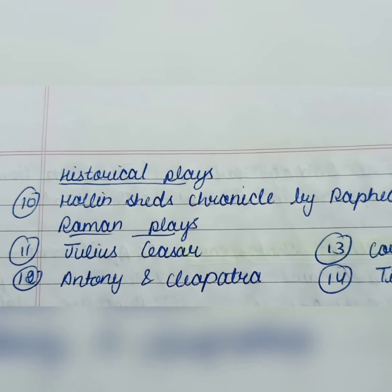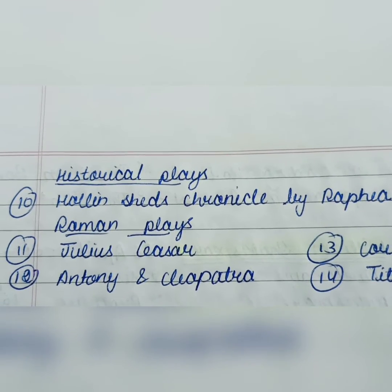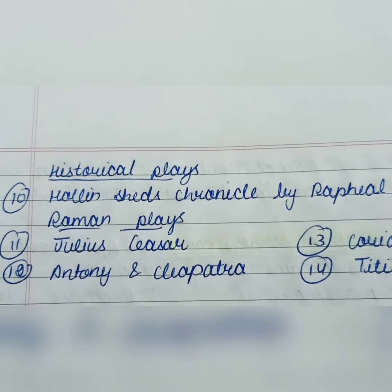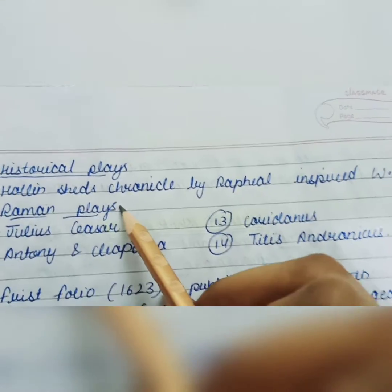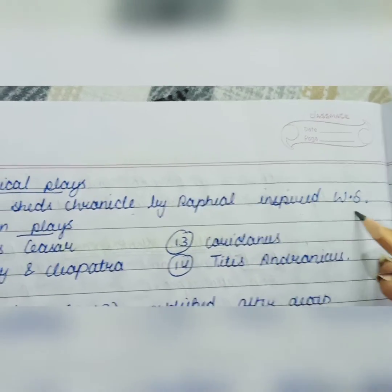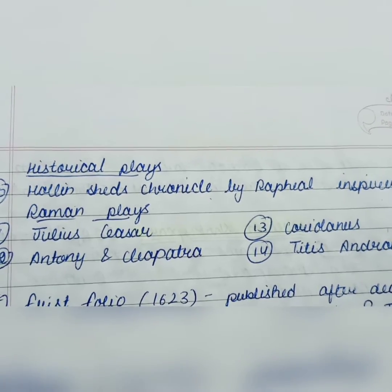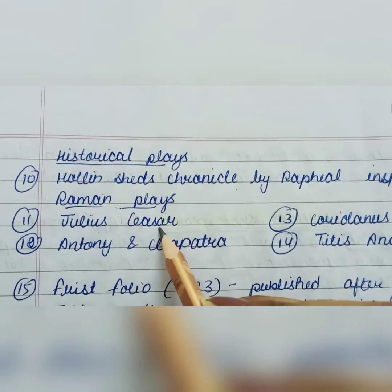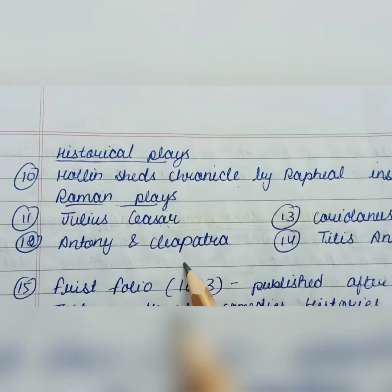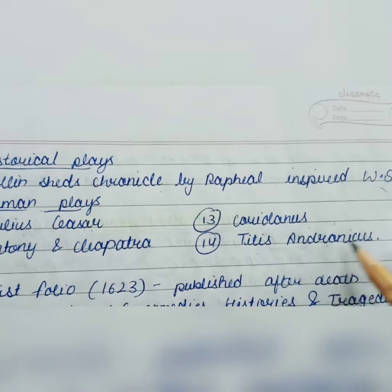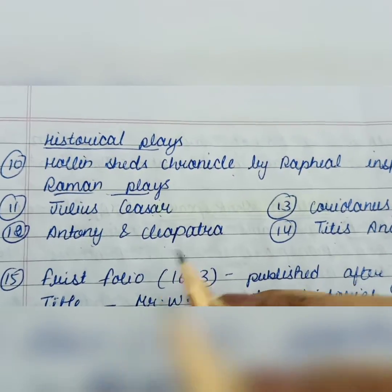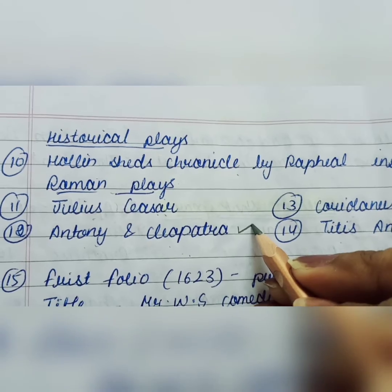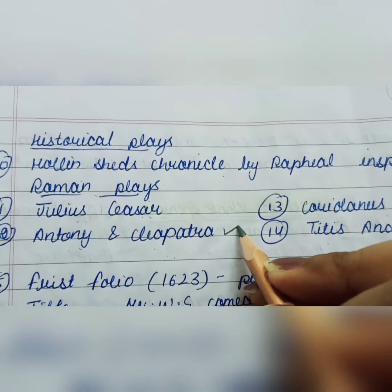Shakespeare's plays are further categorized — some are comedies, some are historical plays, and some are Roman plays. An important historical play inspired by Raphael Holinshed's Chronicle is categorized as a historical play. The Roman plays include Julius Caesar, Antony and Cleopatra, Coriolanus, and Titus Andronicus. Note that Antony and Cleopatra, when specifically asked, is classified as a Roman play.